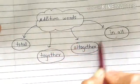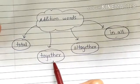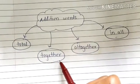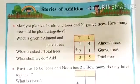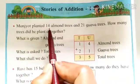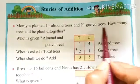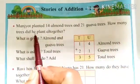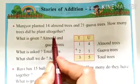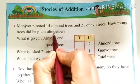By these words we can understand that in this word problem we have to do addition. So now again let us go to our word problem. Again I will read: Manjot planted 14 almond trees and 21 guava trees. How many trees did he plant all together? Now see, here after reading this word problem we come to know the word all together.